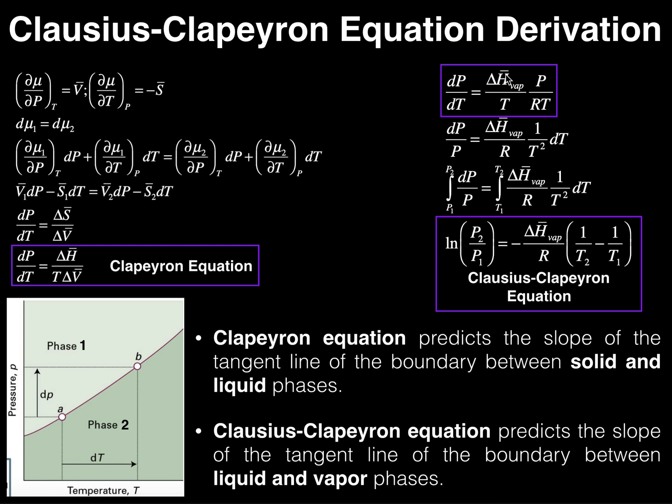Again, the reason this is now delta H of vaporization is because the Clausius-Clapeyron equation is used to predict the slope of the tangent line of the boundary between liquid and vapor phases. So now we're not dealing with solids, we're dealing with liquids and vapors. And technically, you could have sublimation, but in general, we're going to think about this with liquids and vapors.